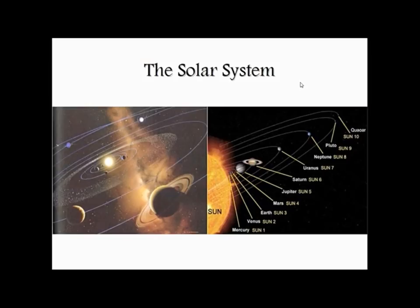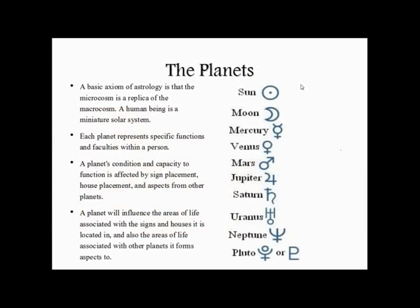The planets represent or are associated with very basic faculties in us. The basic axiom of astrology is that the microcosm is a replica of the macrocosm — you are a miniature solar system. This is a very profound fact, and it's something you can become very intimately familiar with through studying astrology. It can become very real that there is a dance occurring between you and the solar system, and that your personal evolution is happening in sync with it.